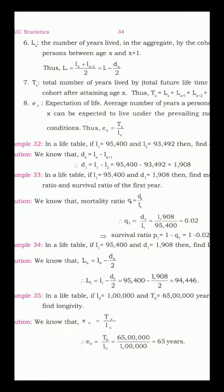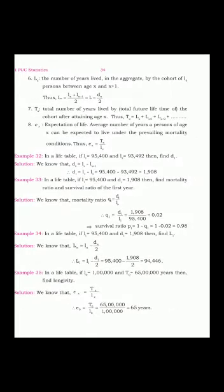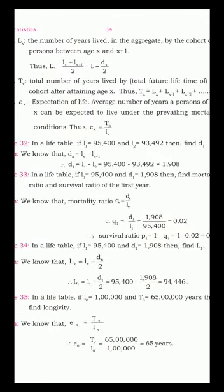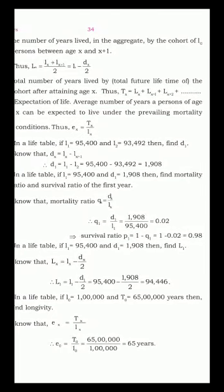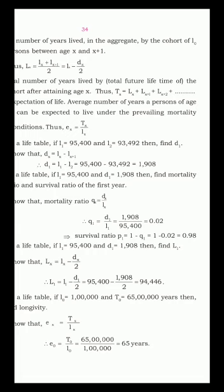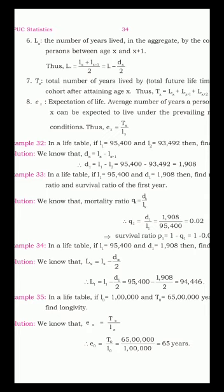The next component is capital Lx — the number of years lived in the aggregate by the cohort of L0 persons between age x and x+1. Thus, Lx = (lx + lx+1) / 2, which is also equal to lx − dx/2. This refers to the collective years lived by the whole group, not an individual. The seventh component, Tx, is the total number of years lived by the cohort after attaining age x. Tx = Lx + Lx+1 + Lx+2 + ...